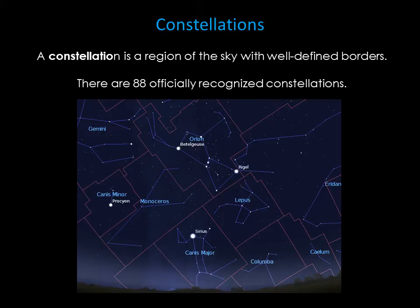There are numerous apps for smartphones and tablets that can help with identifying the constellations. I personally like Google Sky for Android. Alternatively, you can simply go outside and use a star chart.